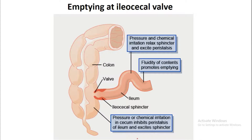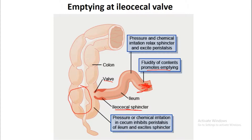At the terminal part of the ileum there is an ileocecal sphincter, which opens into the cecum — the proximal part of the large intestine. The sphincter acts like an open-and-close valve. The fluidity of the contents promotes emptying, so whatever fluid content is present inside the terminal ileum has a positive effect on emptying into the cecum.